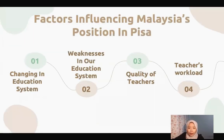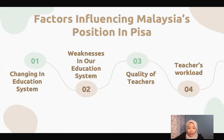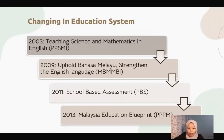Next would be the factors influencing Malaysia's position in PISA. There are four factors we are going to look at: first, changes in the education system; second, weaknesses in our education system; third, quality of teachers; and fourth, teachers' workload.